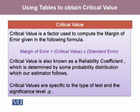Critical values are specific to the type of test and the significance level alpha. With the change in the significance level, the critical value will be changed. It also depends upon the estimators we are trying to estimate the interval for. If the estimator follows the normal probability distribution, we use the normal probability distribution to calculate this critical value, and similarly for other distributions.